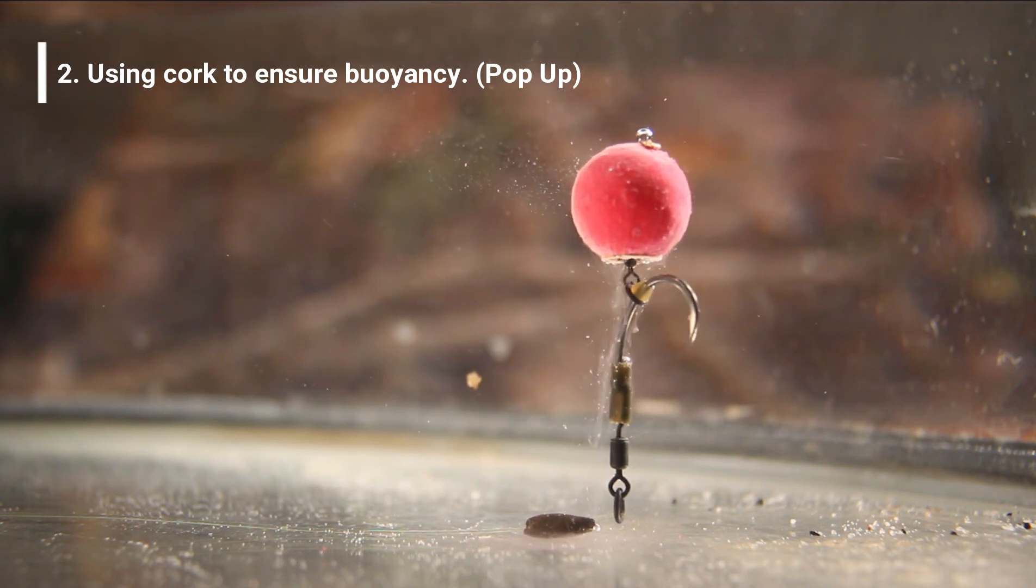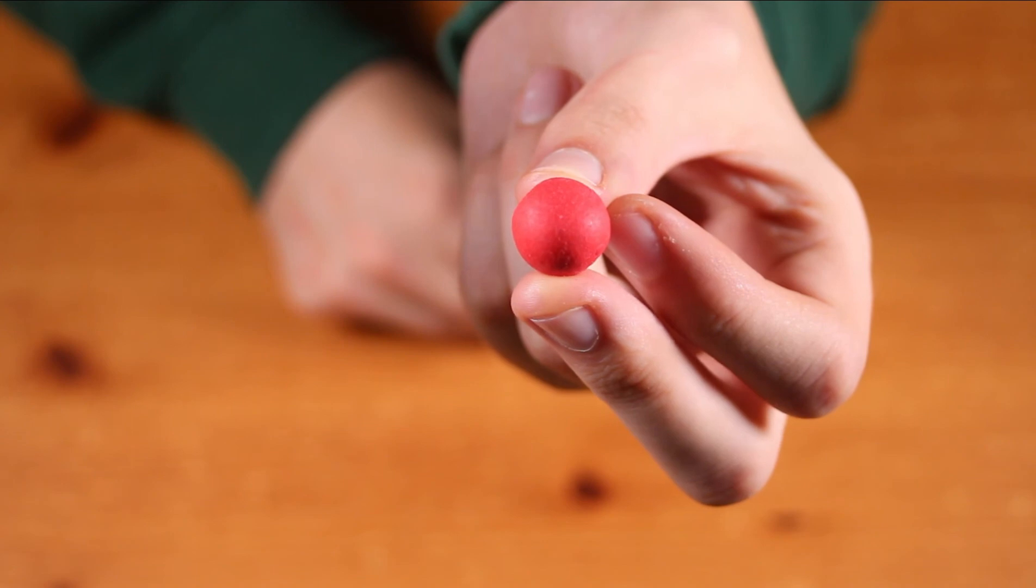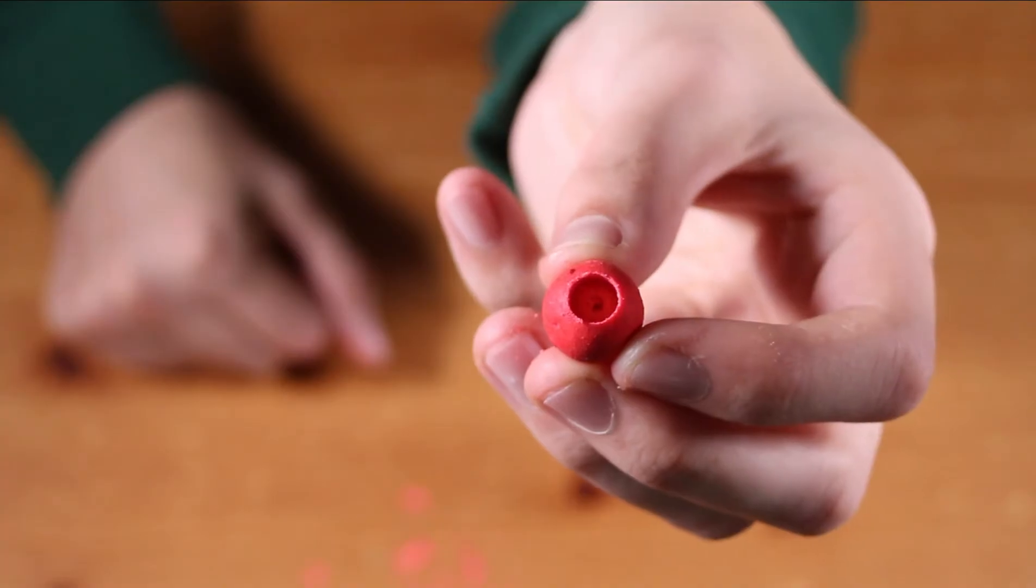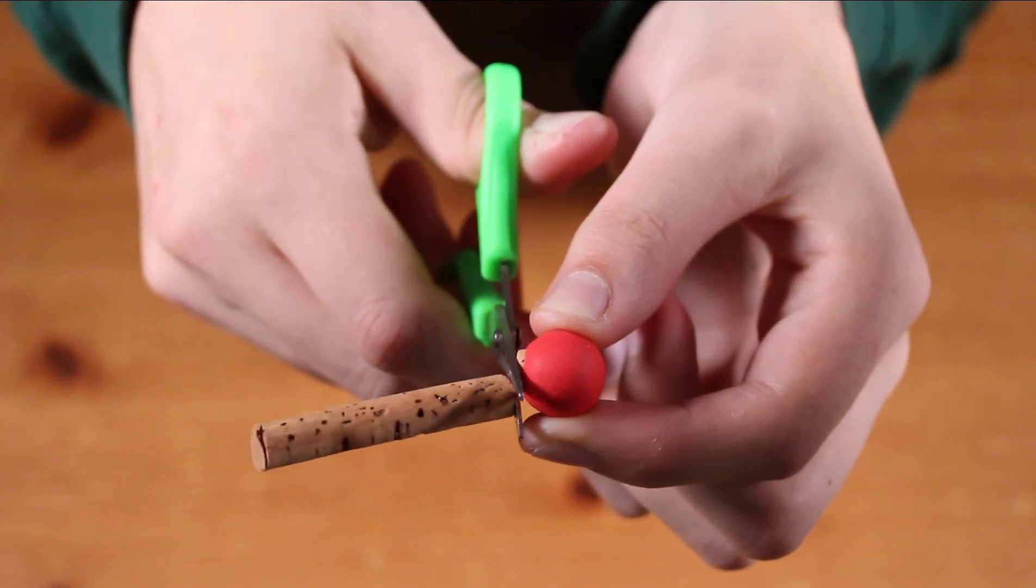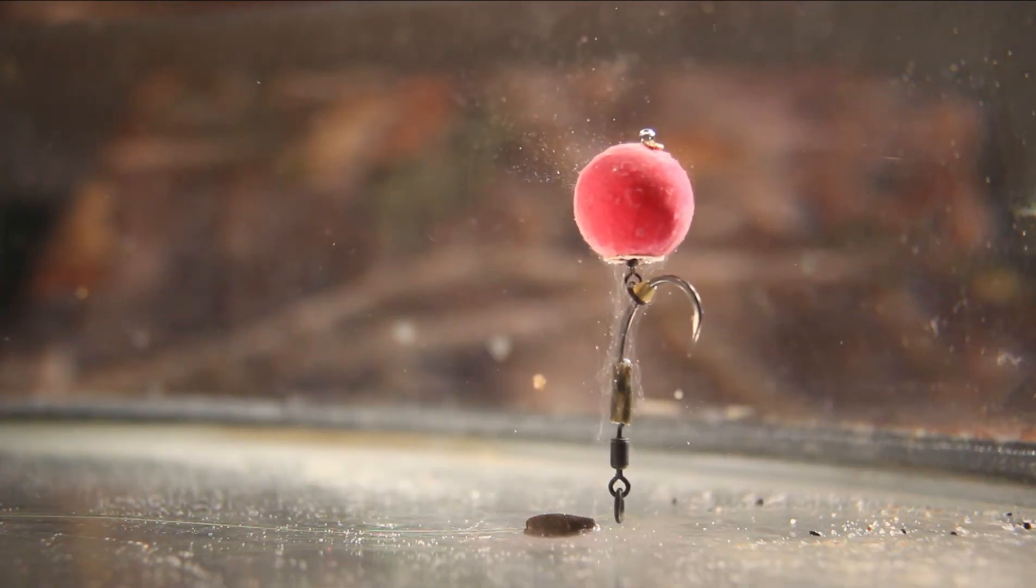Using cork to ensure buoyancy. First take your chosen pop-up and drill about halfway. Push the cork stick into the hole and cut off the remaining. There you have extra buoyancy to your pop-up.